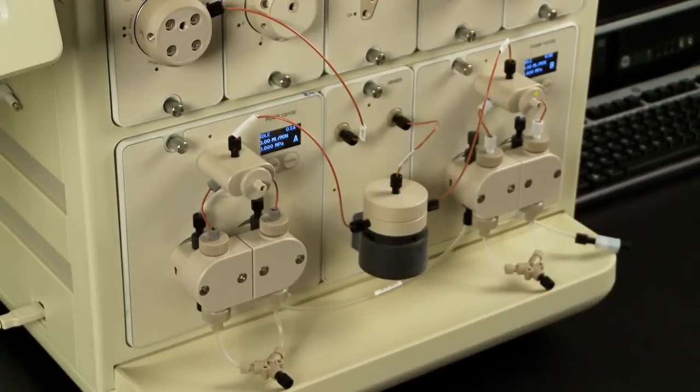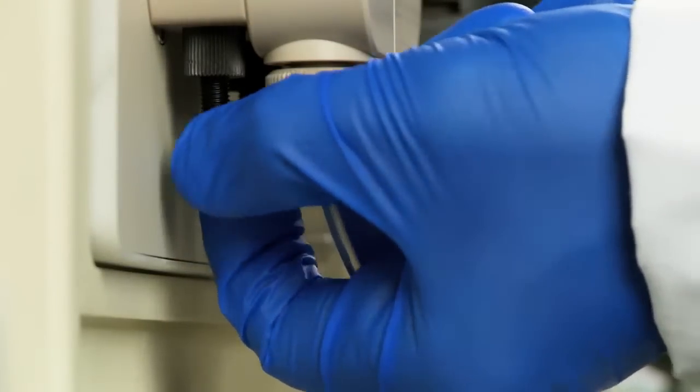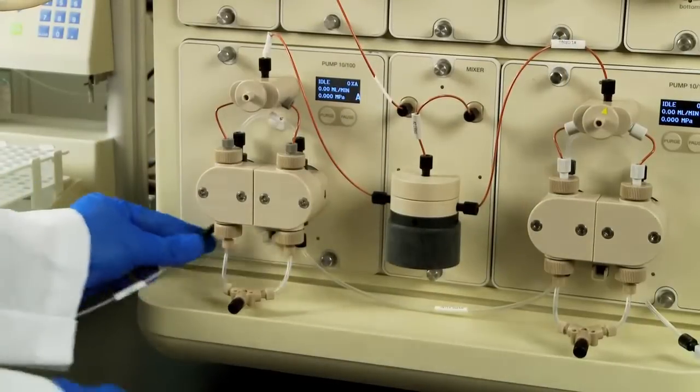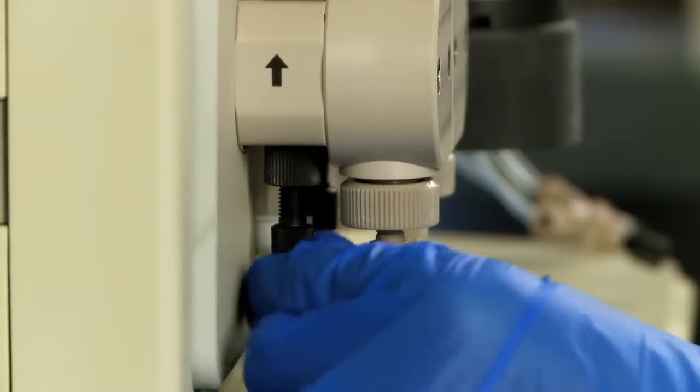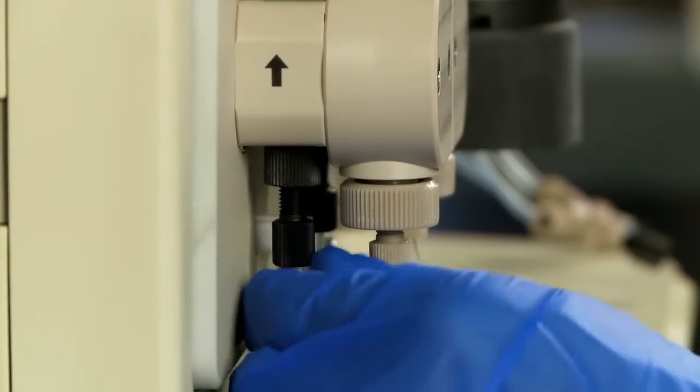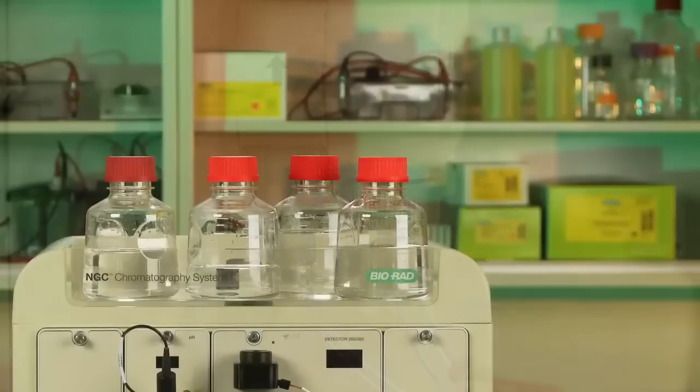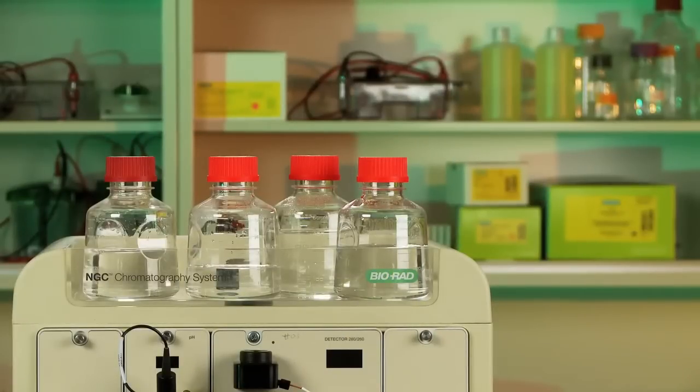First, you will be preparing the pump head washing system. Start by connecting the inlet line, labeled inlet, to the pump wash inlet port of System Pump A, which is the left-most bottom port. Set up a wash reservoir bottle and place to the side or top of the NGC.